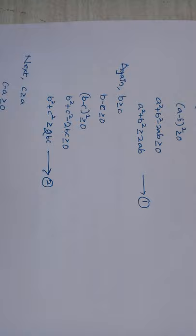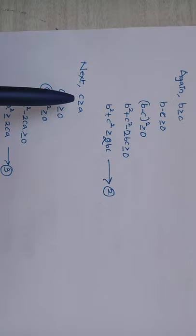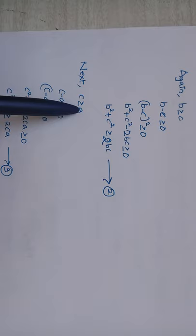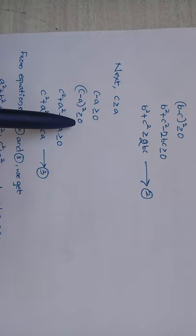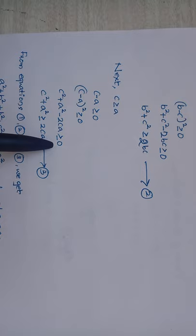Again, taking c ≥ a. If c ≥ 0 and a ≥ 0, then c ≥ a. After subtracting a from both sides, c - a ≥ 0. After squaring: (c-a)² ≥ 0. Therefore c² + a² - 2ca ≥ 0, so c² + a² ≥ 2ca. I take this as equation number 3.